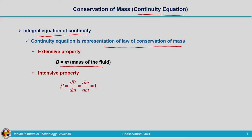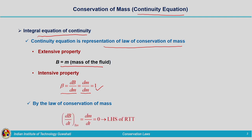Now, the corresponding intensive property — we know the relationship: intensive property beta is dB by dm, that will be dm by dm, which equals 1 in this case. Now, we know by the law of conservation of mass, dB by dt of a system is dm by dt equal to 0, because in the case of a system we are considering a controlled mass. There is no mass transfer taking place from the system to the surrounding or from surrounding to the system — the mass within the system is a controlled mass, or constant mass. So when we take the derivative of a constant value it will be equal to 0. Our left hand side of Reynolds transport theorem is dB by dt, that is the time rate of change of extensive property of the system. Here in our case extensive property is mass of the fluid, so dm by dt is equal to 0. Left hand side of RTT is 0.